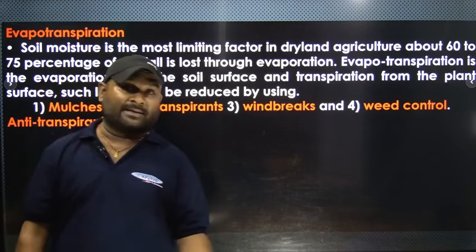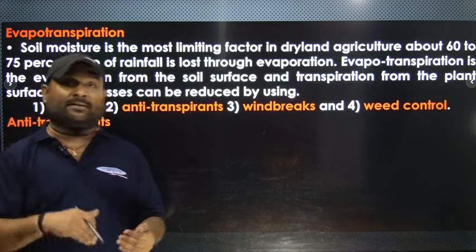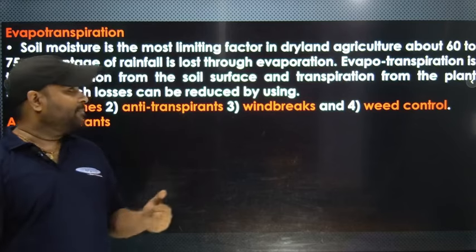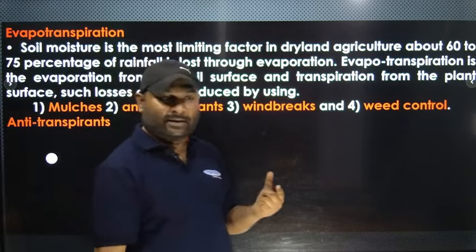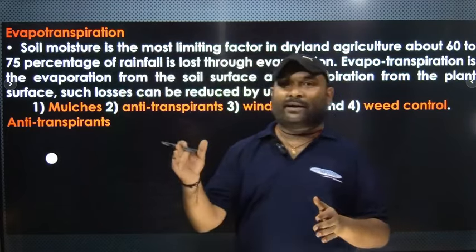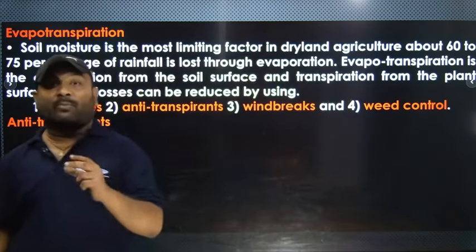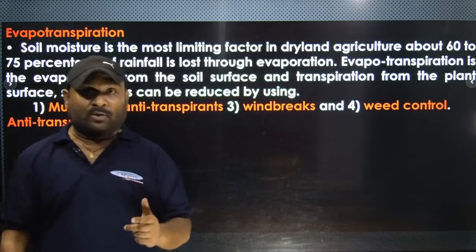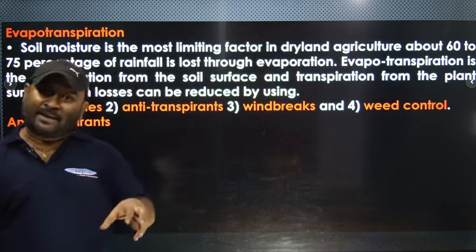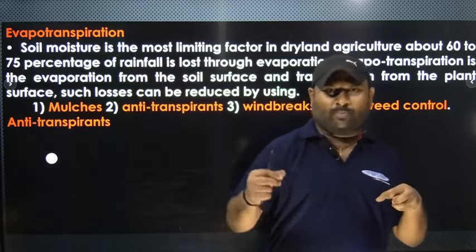We can also use chemicals called anti-transpirants that reduce transpiration from the plant. Another method is windbreak — we plant trees or barriers around the crop area to reduce wind velocity, which reduces transpiration. We also control weeds, because weeds in the field consume soil moisture. By controlling weeds, we reduce the loss of soil moisture and improve crop yield.